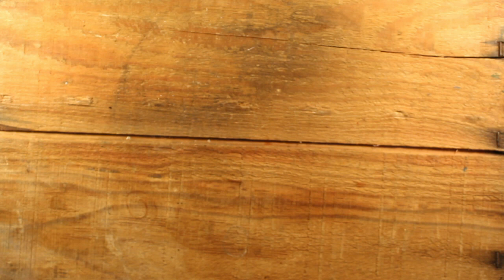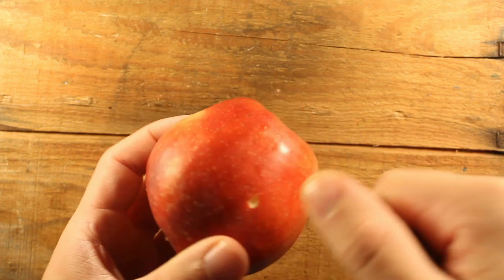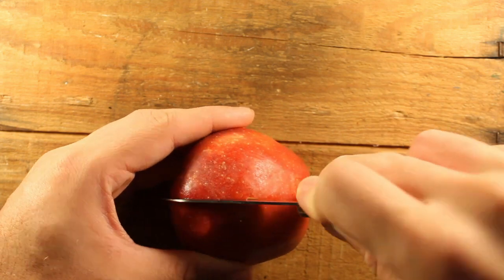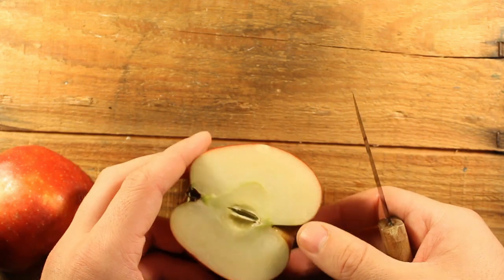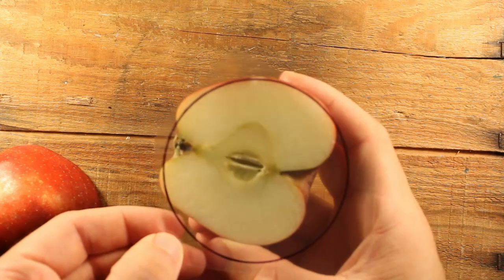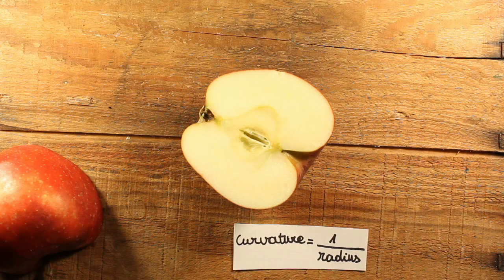Now that we have a definition for the curvature of 1-dimensional curves, we can try to extend it to 2-dimensional surfaces. Say, can we calculate the curvature of the surface of this apple in this point? Well, if we cut through this point and look from the side, the surface becomes a curve. And we already know how to calculate this curvature. Just find the kissing circle, measure its radius, and the curvature is 1 divided by its radius.